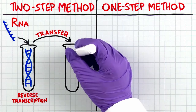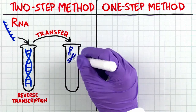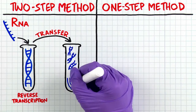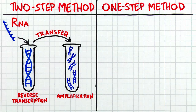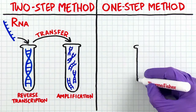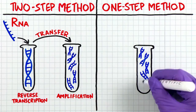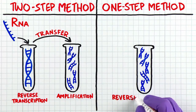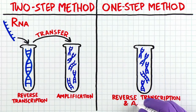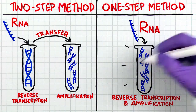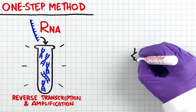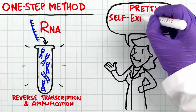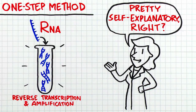In the second step, the second-strand cDNA is generated and real-time detection is performed. The other method, known as one-step, is where the reverse transcription and amplification are performed together in the same tube. Pretty self-explanatory nomenclature, right?